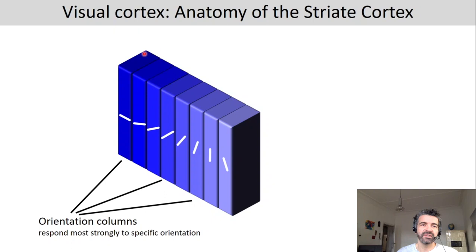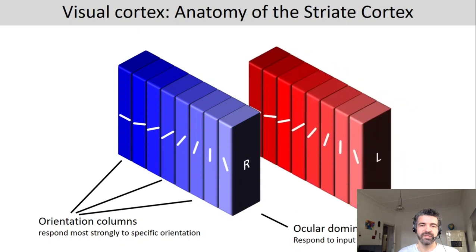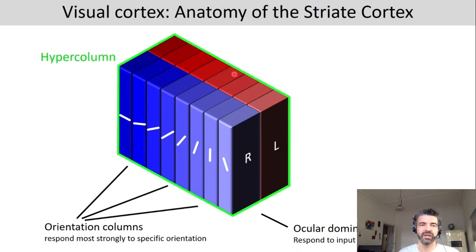We have cells in these columns that are very strongly responding to a specific orientation — a little bit to stimuli of similar orientations, but not at all to stimuli of very different orientations. We also have an ocular dominance column structure here, where all these columns get input from either the contra or ipsilateral eye — so right or left eye. All this combined is what we refer to as a hyper column.